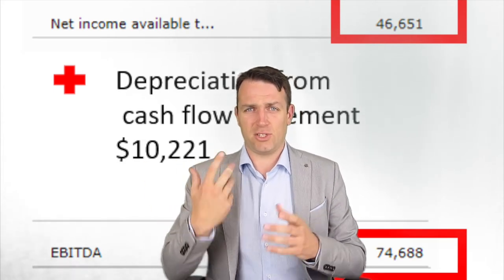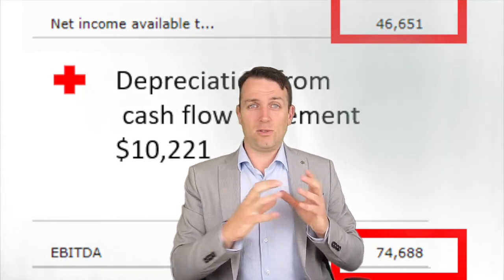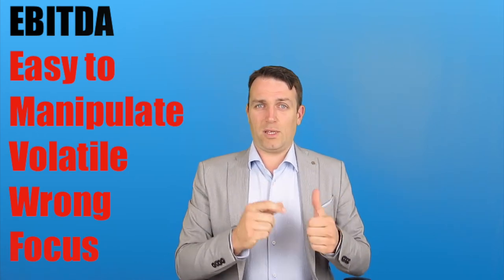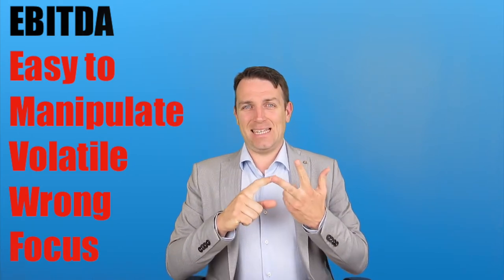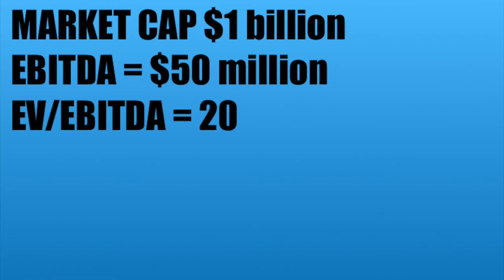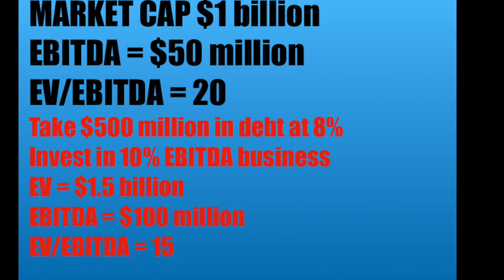You eliminate all those things like depreciation, taxes, interest rates — and you have more money to make acquisitions. Now the cons. A company with a market cap of $1 billion, no debt, and EBITDA of $50 million has an EV/EBITDA ratio of 20. A manager can take $500 million in debt at 8% interest and invest it in a risky business with a 10% temporary EBITDA yield. After a year, the company's EBITDA doubles, with an enterprise value of $1.5 billion. The new EV/EBITDA ratio is 15 — much better than the previous 20. According to the general analyst community, that would be an improvement and the manager would get a bonus.